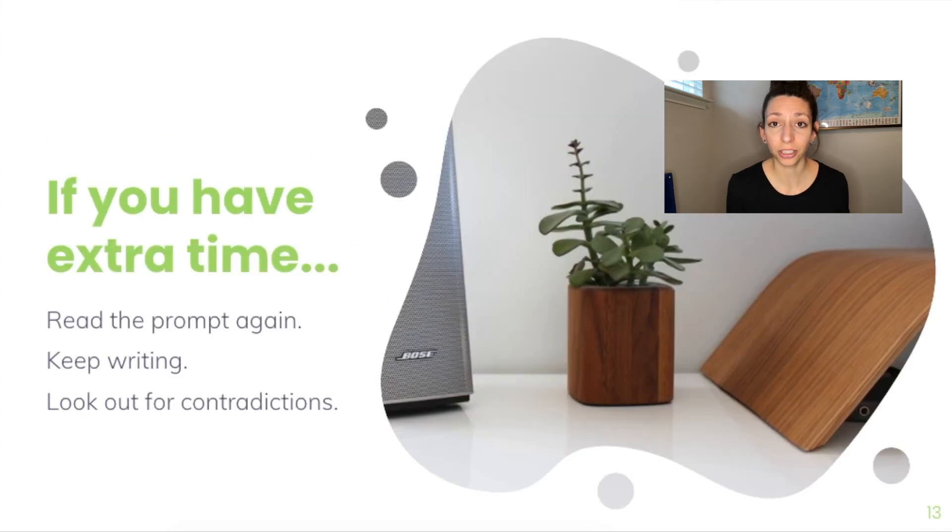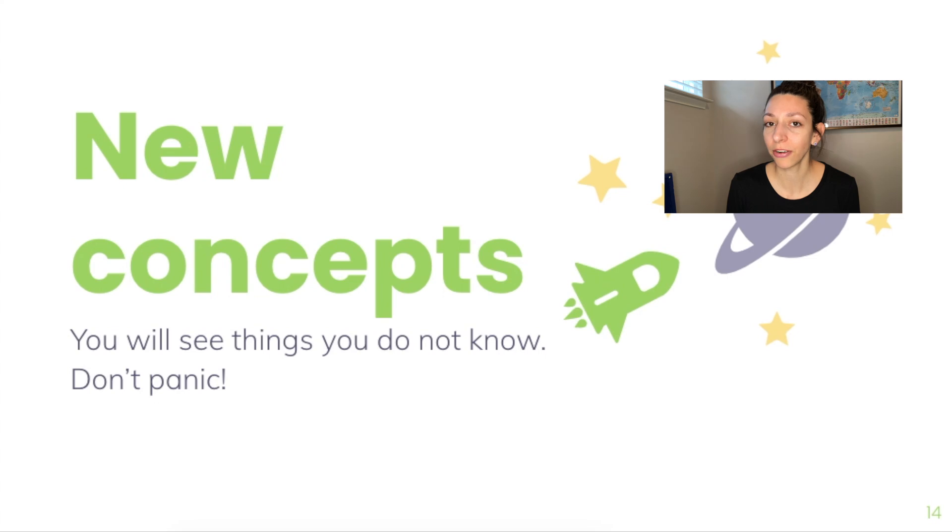If you have extra time when you're done, don't just sit there. Make sure you read the prompt again. Try to see if there's anything that you might have missed the first time around, and you can keep writing. Look out for contradictions though. If you add to your answer and contradict something you said before, you will not be given points for it. It's okay if you have an incorrect thing in one part of your answer and a correct thing later on, as long as they don't contradict each other. The graders are looking to give you points where they can, so do your best to put out any information that is correct. Don't overwrite, but answer the question and put out information that you think will best support the answer.